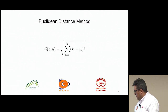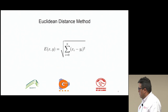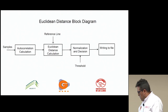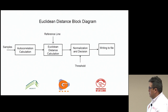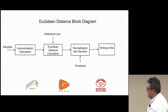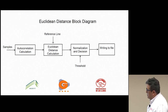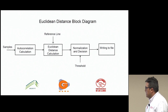This is the formula for the Euclidean distance. This is the block diagram for this method implemented in GNU Radio. It takes the samples, calculates the autocorrelation, then the Euclidean distance. The reference line is entered into this block to calculate the distance.